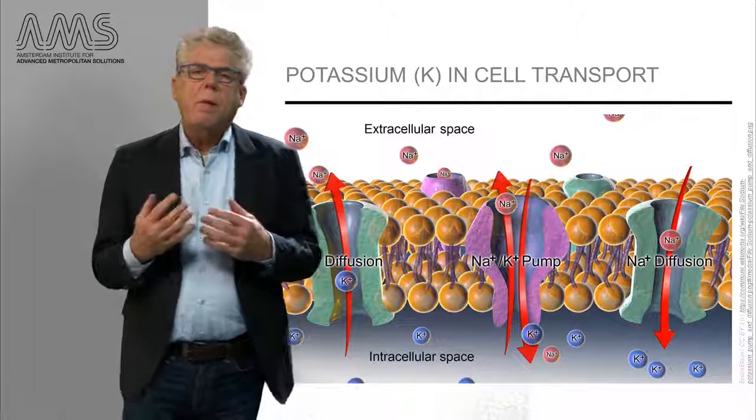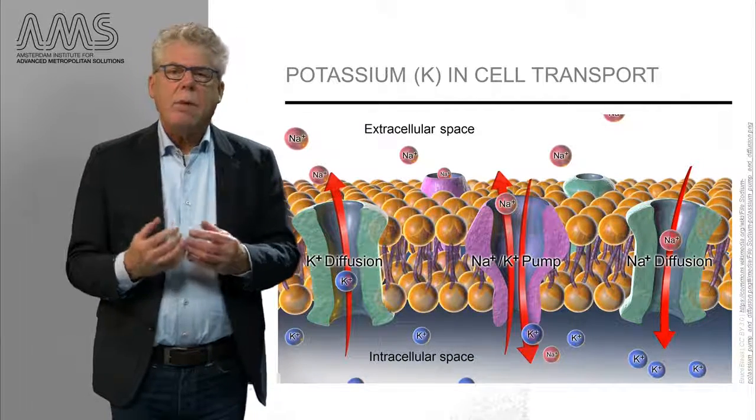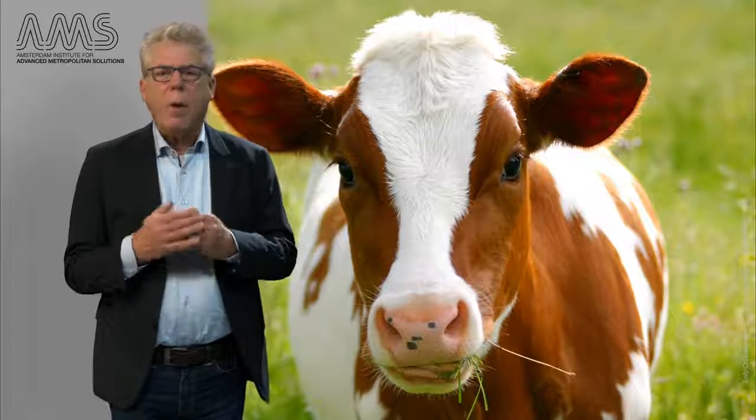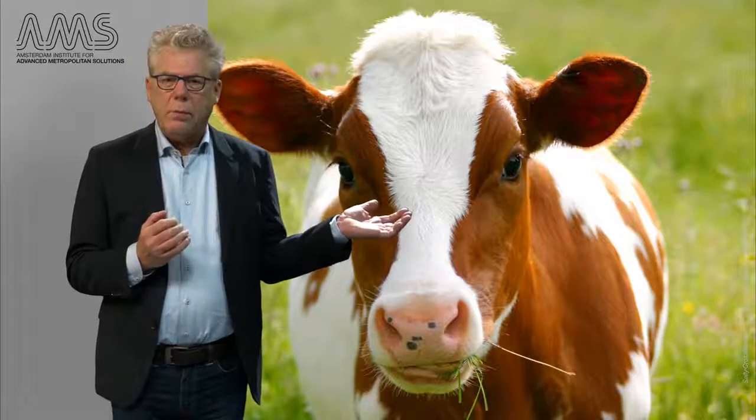Potassium is among other things essential to maintain the transport mechanisms in your cells. These nutrients are essential for you, but they are also essential for all other forms of life, including the crops and livestock that become our food. So to produce crops for our cities, these nutrients are urgently required. If they are not supplied in sufficient quantities, agricultural yields will drop and food security is put at risk.